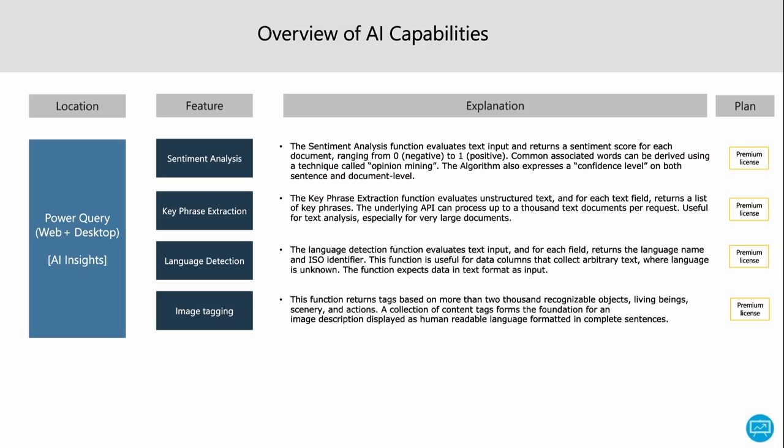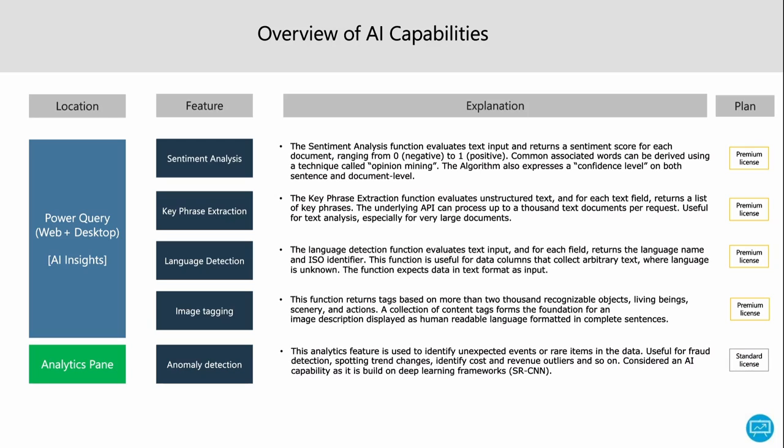And then afterwards users can search on these labels. The second location where you can find AI capabilities is the analytics pane. In the analytics pane you have a feature called anomaly detection, which is used to identify unexpected events or rare items in the data — outliers, trend changes, things that are not in line with the rest of your data.